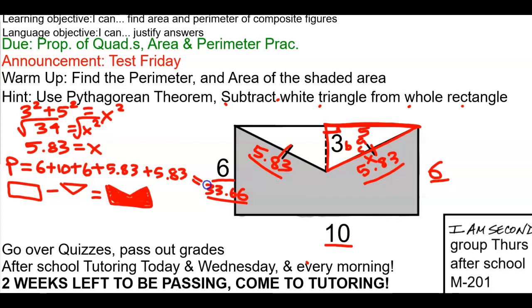Now how do I find the area of a rectangle? Does everyone know? It's length times width. What's the length and the width of the rectangle? 6 and 10, right? So for the rectangle it's going to be 6 times 10, which is 60 units squared.